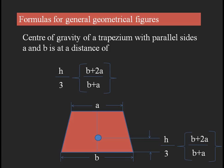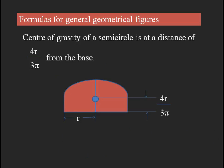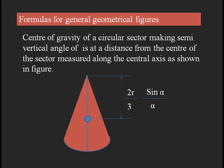For a semicircle with radius r, the center of gravity from its base is given by the formula 4r / 3π. Remember this formula: the center of gravity for a semicircle from its base is 4r / 3π.